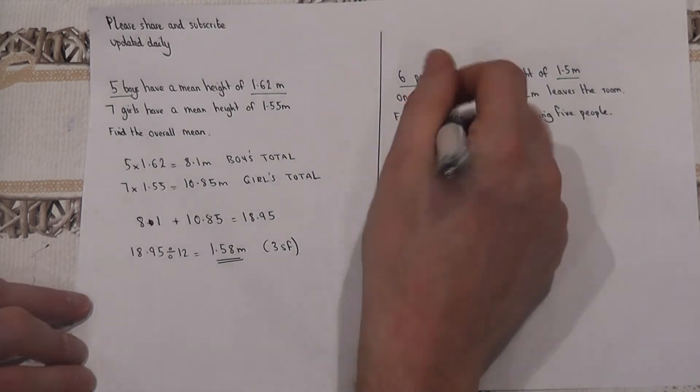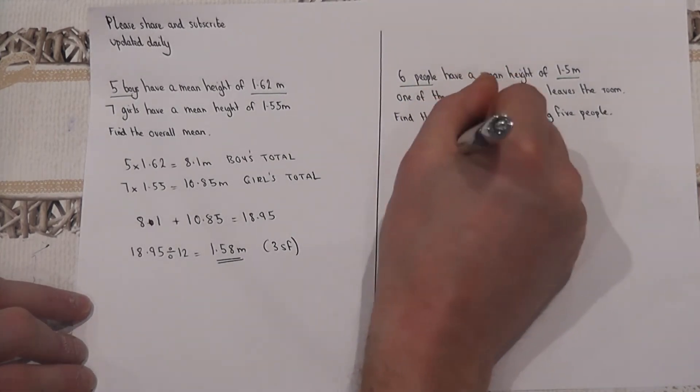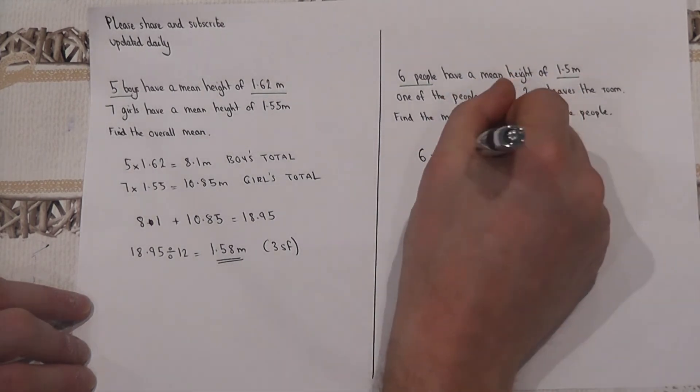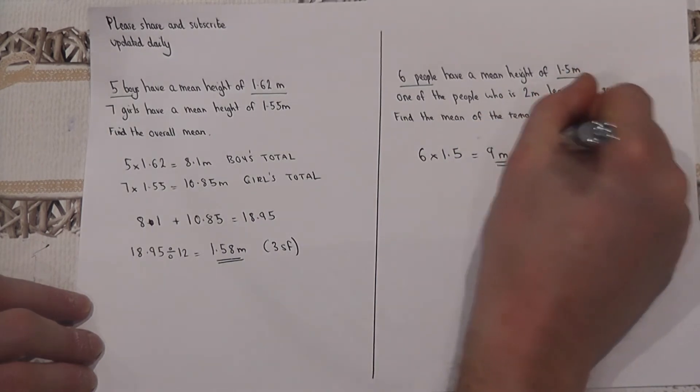However, we still obey the same idea. There are six people originally in the room, each at a height of 1.5. So six times 1.5 is nine meters. So that is the overall total of everybody in the room to begin with.